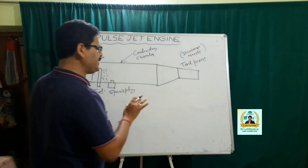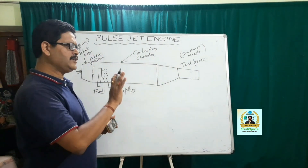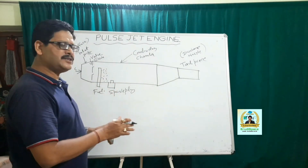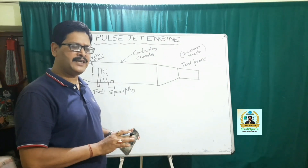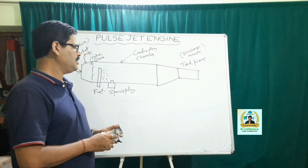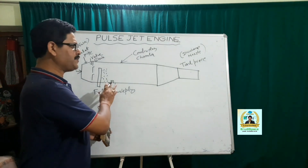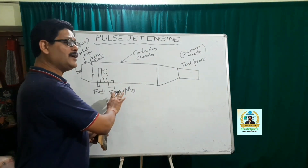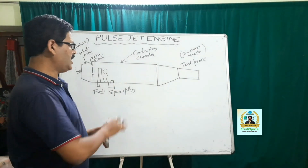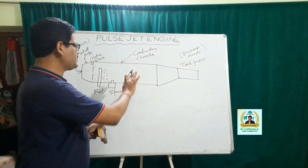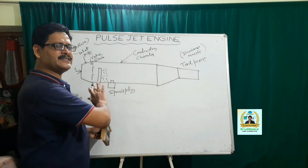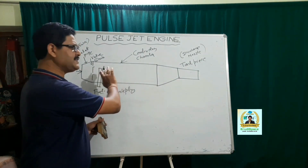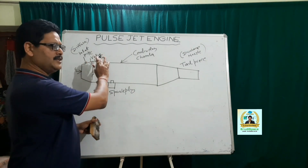There is a fundamental difference between internal combustion engines and the pulse jet engine as far as the role of the spark plug is concerned. In all types of internal combustion engines — whether spark ignition or compression ignition — the spark plug's function is to ignite the air-fuel mixture. In the pulse jet engine, the spark plug helps only in the initial burning of the fuel; once it is operational, the residual gases left over actually ignite the fuel.